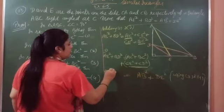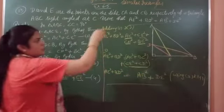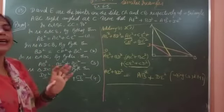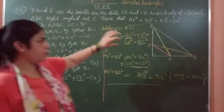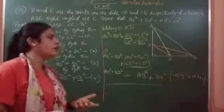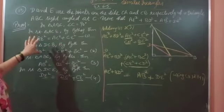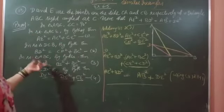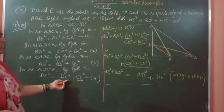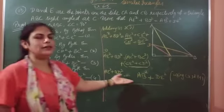So AE square plus BD square is equal to AB square plus DE square. Hence proved. We just applied Pythagoras theorem to the right triangles, then added AE square and BD square equations, and substituted the values to complete the proof. Thank you.